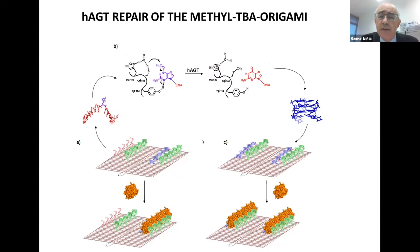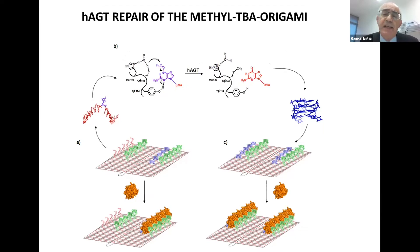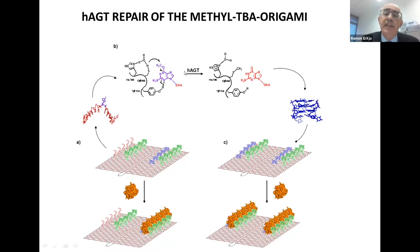We introduced aptamers that bind to the protein thrombin. These aptamers contain G-quadruplexes, and we introduced a methyl guanine. Why? Because there is a protein, the human alkyltransferase, that is able to remove this methyl group, and this reaction is difficult to follow.